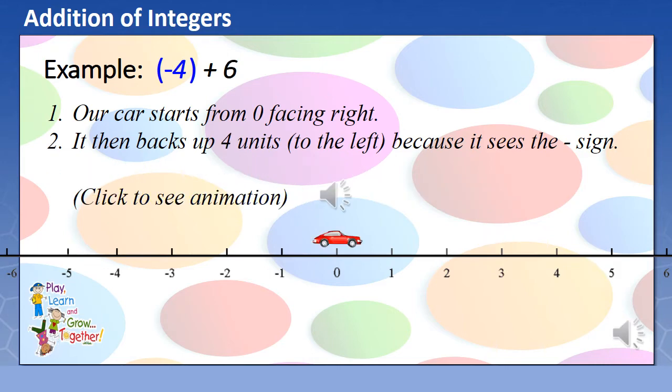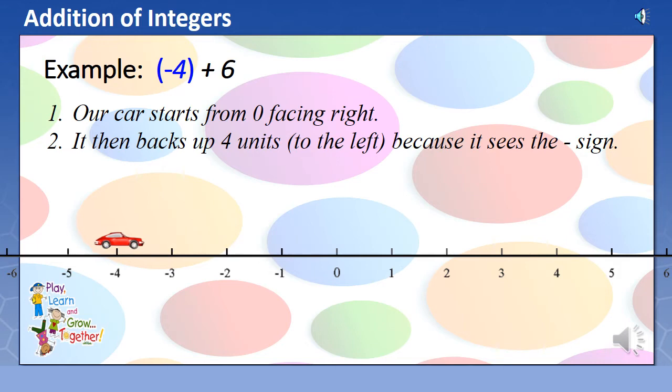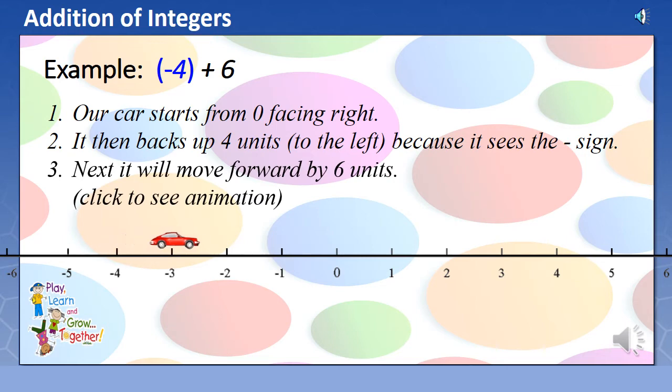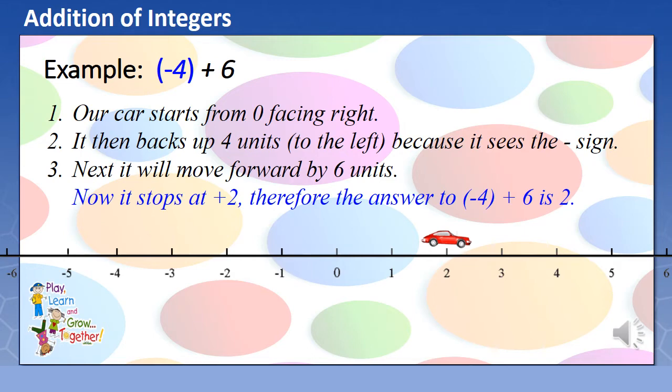Now, let us try another example. What do you think is the sum of negative 4 and positive 6? From negative 4, the car will move forward by 6 units. Now, it stops at positive 2. Therefore, the answer to negative 4 plus positive 6 is positive 2.